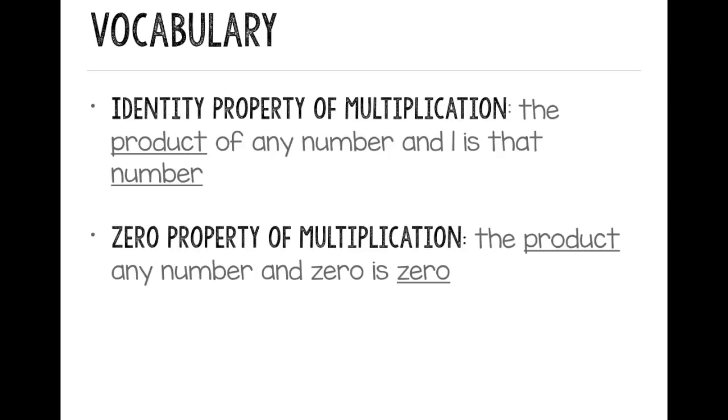Let's start by talking about our vocabulary. Our first term is the identity property of multiplication. And this tells us that the product of any number and 1 is that number.